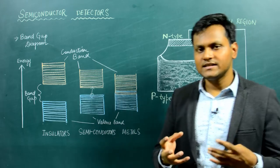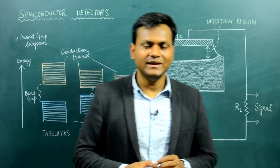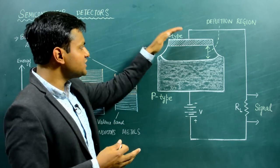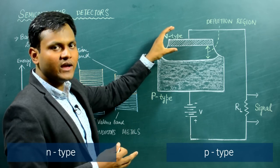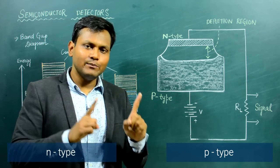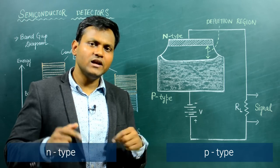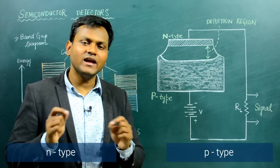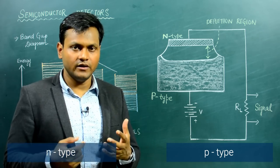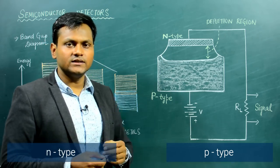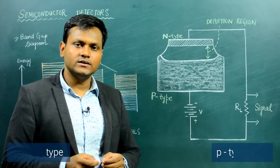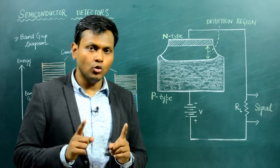Semiconductor detectors are made out of this kind of semiconductor material. In this case, we have a P-N junction diode. A P-N junction diode is made out of an N-type semiconductor and a P-type semiconductor. They are made out of the same material, but they have different kinds of doping because of which the majority charge carrier is different. In an N-type semiconductor, the majority charge carriers are electrons, while in the P-type semiconductor, the majority charge carriers are holes.